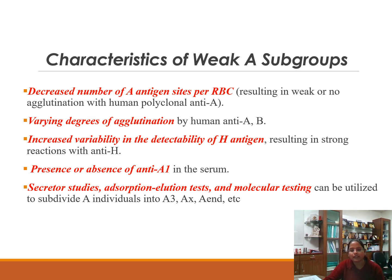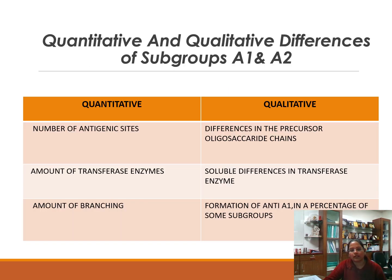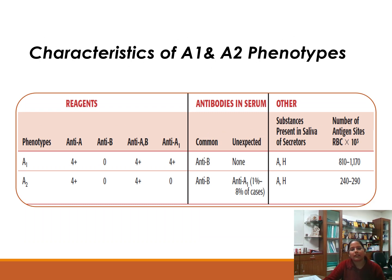Weak A subgroups have a decreased number of A antigen sites per RBC, resulting in weak or no agglutination with polyclonal anti-A antisera, and varying degrees of agglutination with human anti-AB antisera. There is increased H antigen expression resulting in strong reactions with anti-H. The presence or absence of anti-A1 in serum varies, and these subgroups can be confirmed with secretor studies, absorption-elution studies, and molecular testing.